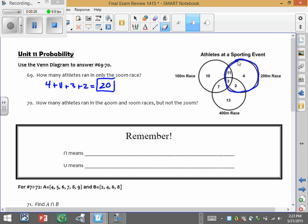How many ran in the 400 and in the 100 but not in the 200? So 400 and 100 would be here but you want the ones that were not in the 200. So that means there were only 7 athletes there, just using the diagram.